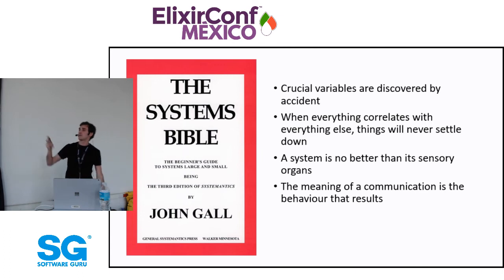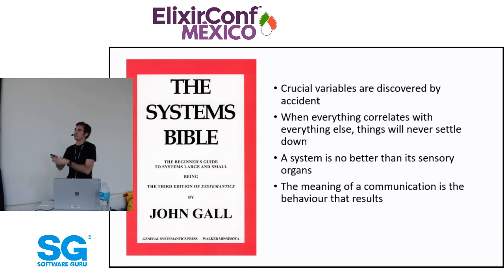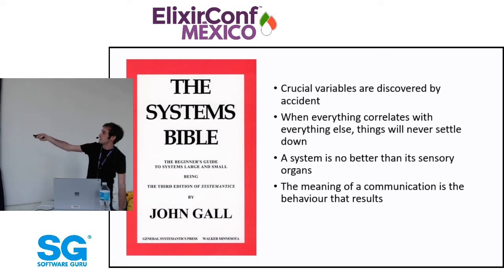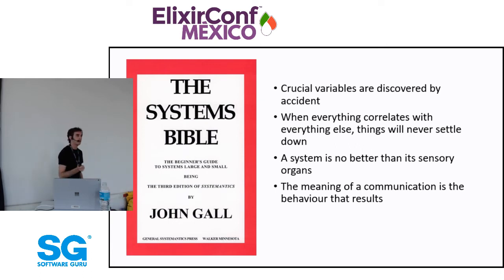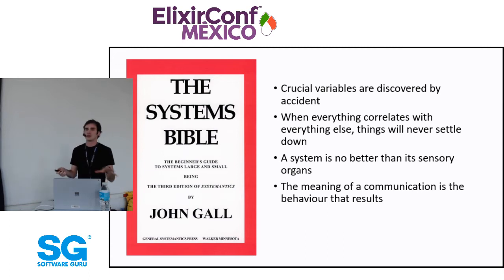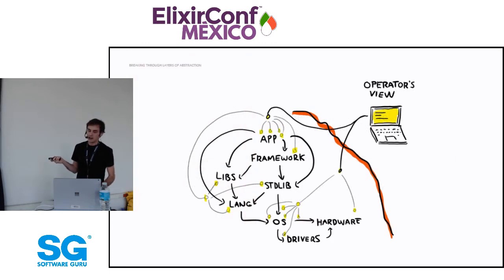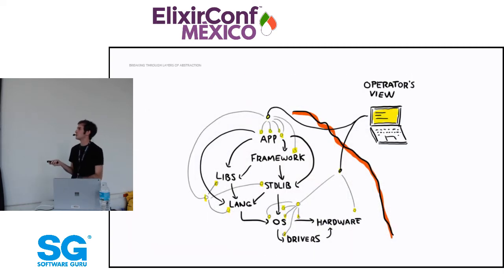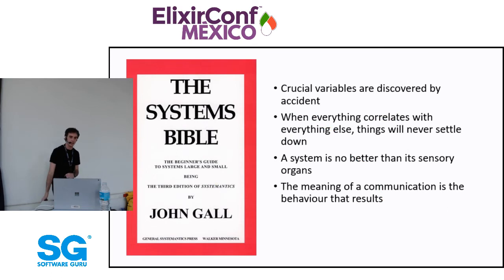A system is no better than its sensory organs. If you don't have good ways to get observability without building a glass house, the system is not going to have good quality. And I like the last one: the meaning of the communication is the behavior that results. If what you're communicating causes people, systems, or services to change what they're doing, it's meaningful communication. If you have a glass house where 99% of the information you output is used by no one and has no consequences, it's essentially useless.